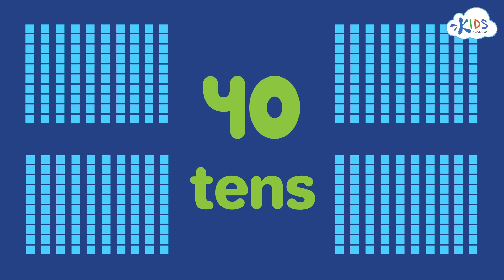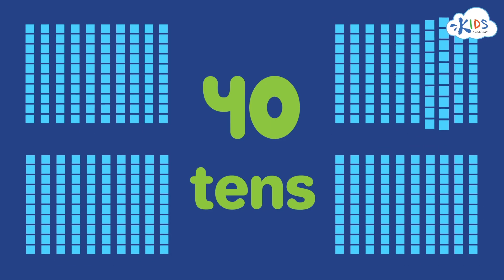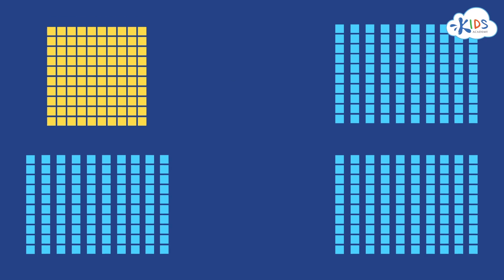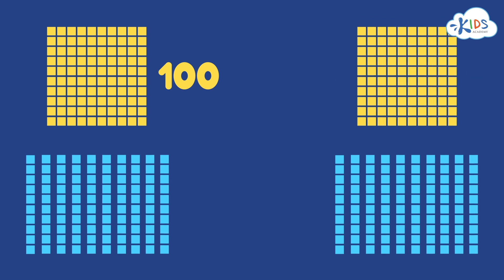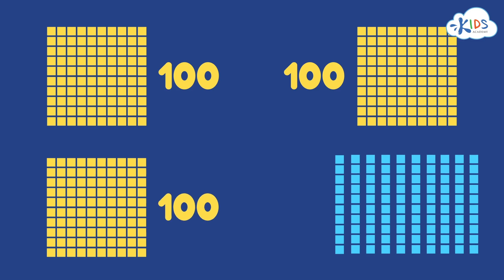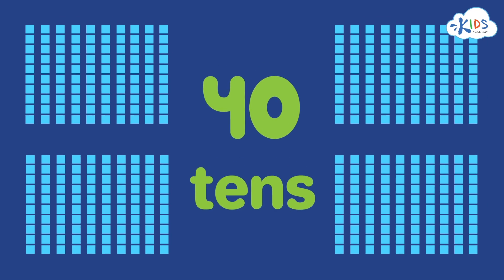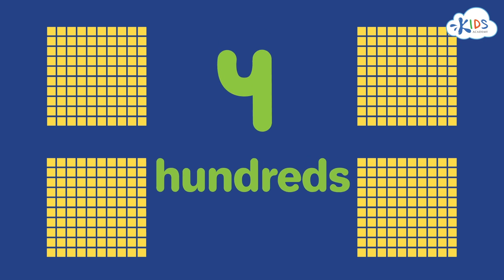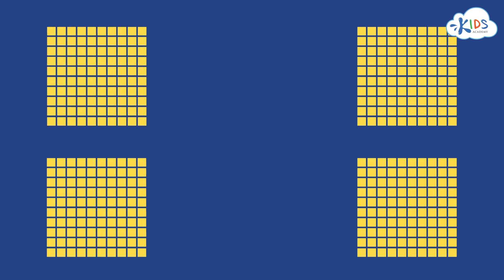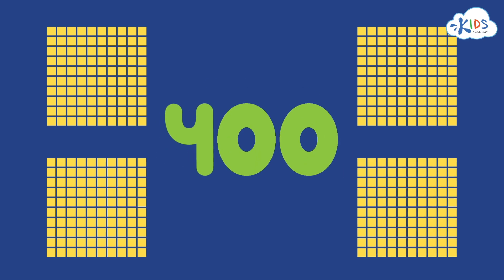Okay, here's the answer. If each long is worth ten, we can count each long as ten. If we put ten of the longs together, we can trade it for one hundred. We can take the other ten longs and trade it for another hundred. We can take another ten longs and trade it for another hundred. Now instead of counting the forty longs, we can just count the four hundreds: one hundred, two hundred, three hundred, four hundred. That was a lot easier.